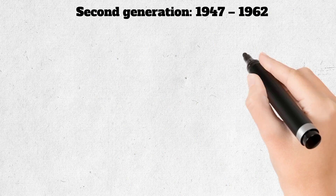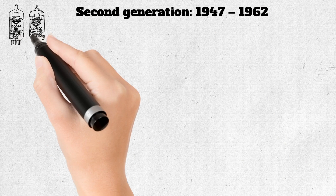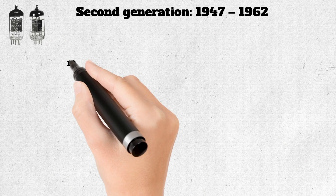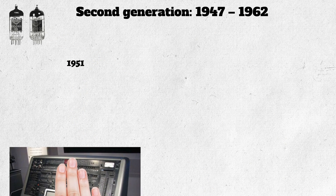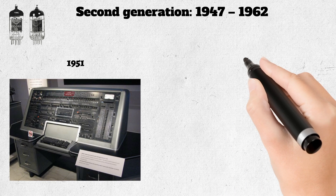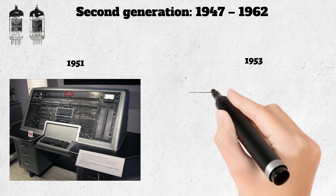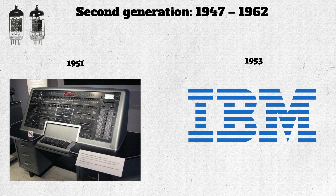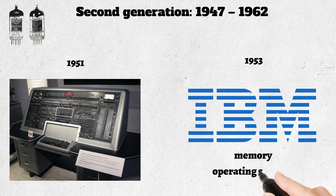The second generation of computers used transistors instead of vacuum tubes, which were more reliable. In 1951, the first computer for commercial use was introduced to the public: the Universal Automatic Computer. Then in 1953, the International Business Machine computers made their mark in the computer world. During this generation, over 100 programming languages were developed. Computers had memory and operating systems, and storage media such as tape and disk were in use, with printers for output.